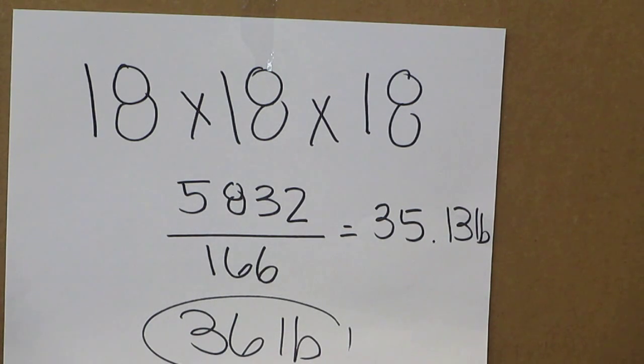Now you can see an 18 by 18 by 18 box there - that's length, width, and height. So if you multiply that, that makes it 5,832 cubic inches.